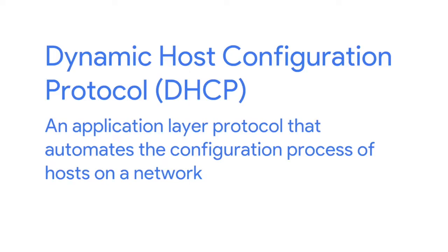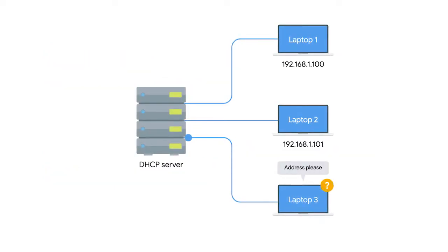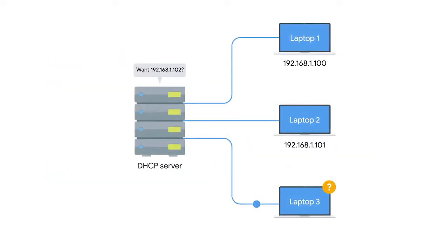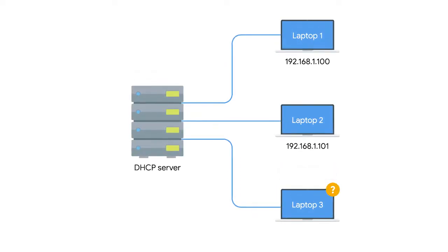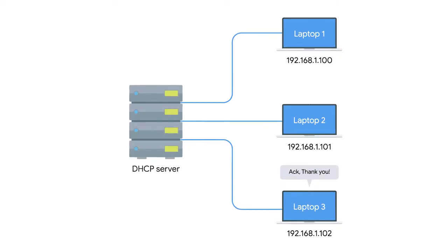DHCP is critical to know as an IT support specialist when it comes to troubleshooting networks. DHCP is an application layer protocol that automates the configuration process of hosts on a network. With DHCP, a machine can query a DHCP server when the computer connects to the network and receive all the networking configuration in one go.